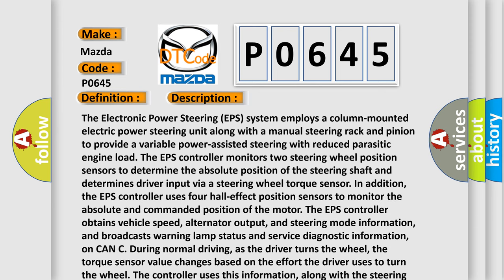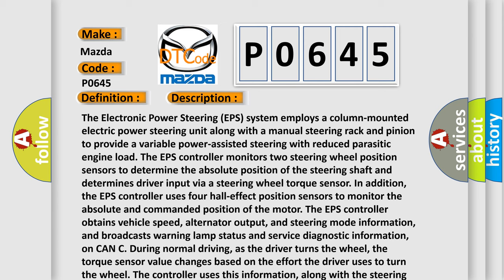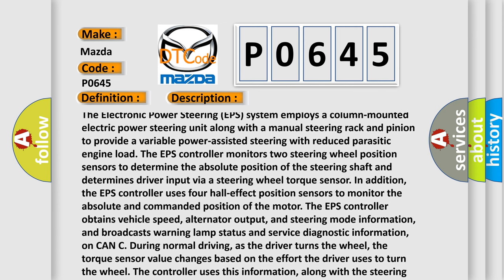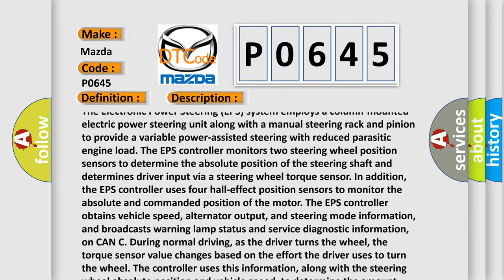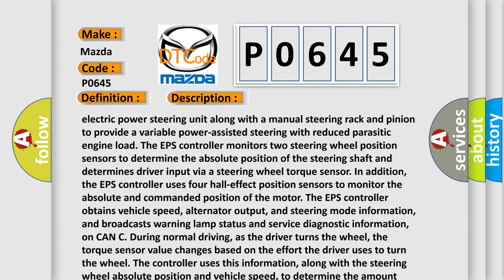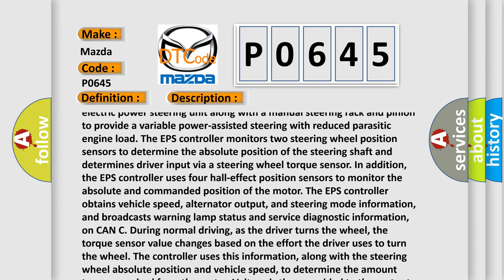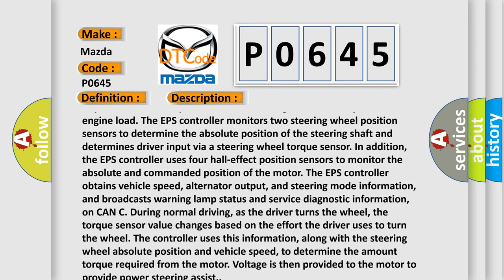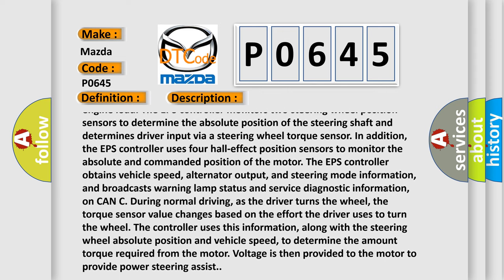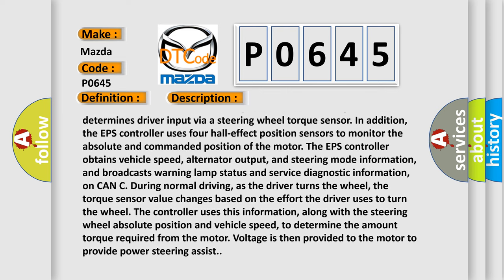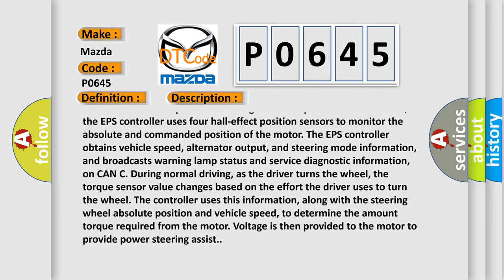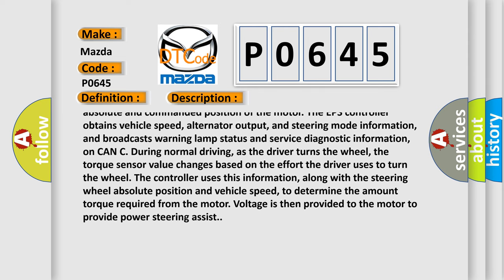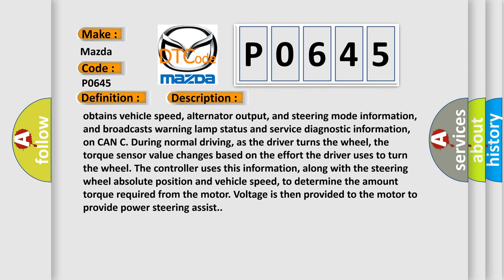The electronic power steering (EPS) system employs a column-mounted electric power steering unit along with a manual steering rack and pinion to provide variable power-assisted steering with reduced parasitic engine load. The EPS controller monitors two steering wheel position sensors to determine the absolute position of the steering shaft and determines driver input via a steering wheel torque sensor. In addition, the EPS controller uses four hall-effect position sensors to monitor the absolute and commanded position of the motor. The EPS controller obtains vehicle speed, alternator output, and steering mode information, and broadcasts warning lamp status and service diagnostic information on CAN-C during normal driving.